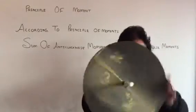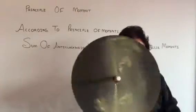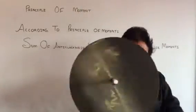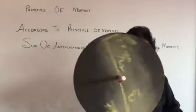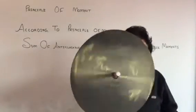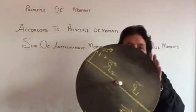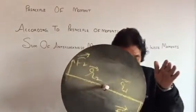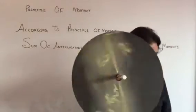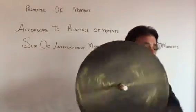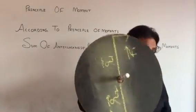Now it is just rotating. According to the principle of moments, if the algebraic sum of the moments of all the forces acting on the body about the axis of rotation is zero, the body is said to be in equilibrium. Total algebraic sum of the moments is zero.